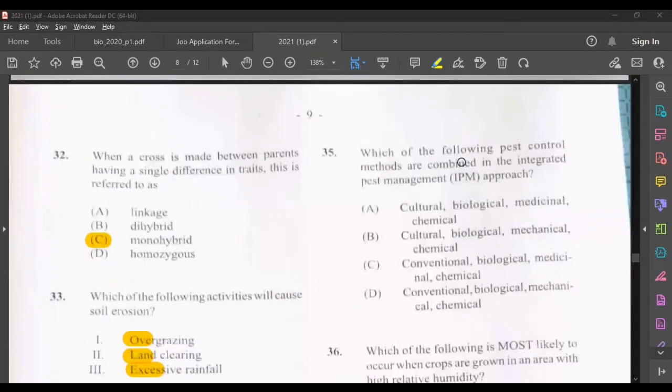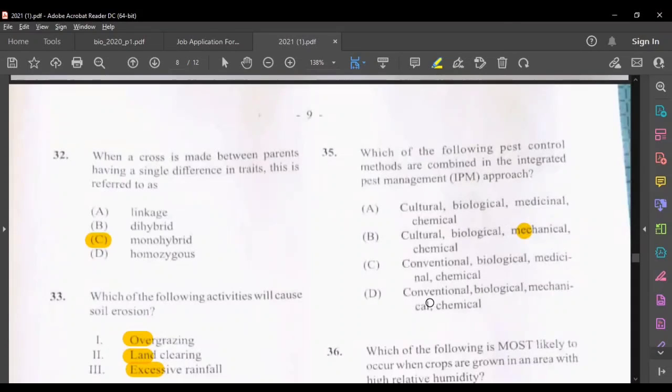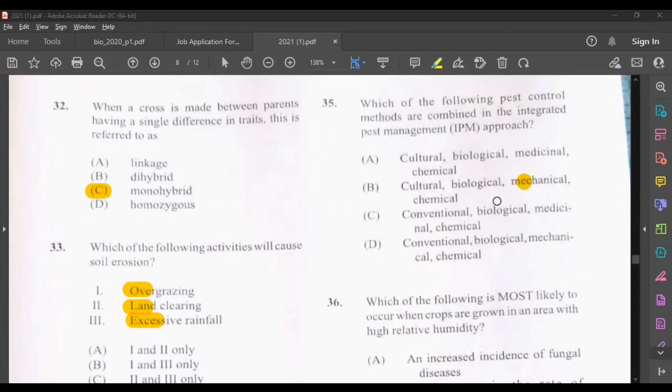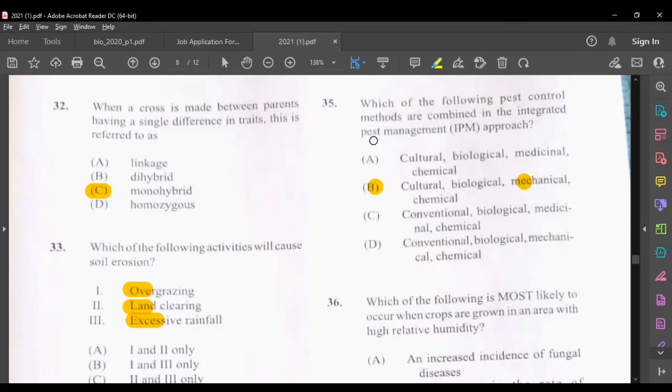Moving on to question 35, which of the following pest control methods are combined in the integrated pest management approach? So cultural, biological, medicinal, no that doesn't sound right. Cultural, biological, mechanical. Conventional, biological, medicinal, not really. Conventional, biological, mechanical, and chemical. Now this is a tricky one. B, we have cultural, biological, mechanical, and chemical. So B would be the correct answer for this question.